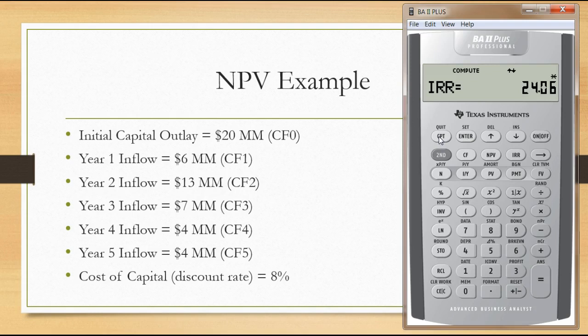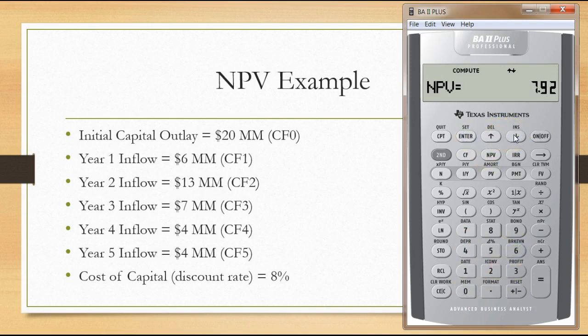We can confirm that since we can now calculate NPV. If we go back to NPV and instead of using our cost of capital of eight percent, we enter 24.06 and hit the down arrow to get to NPV, then press compute — the NPV equals zero. This confirms that IRR is the discount rate that makes NPV equal to zero. I hope this tutorial helped. Please feel free to leave comments or questions below, and thank you for watching.